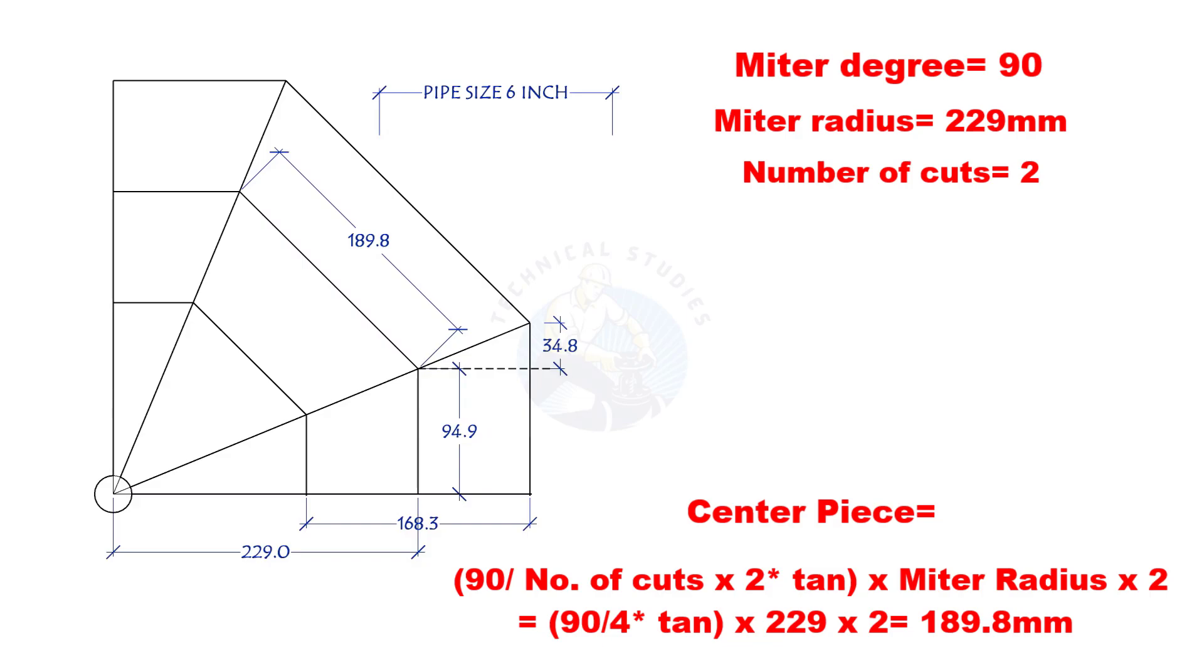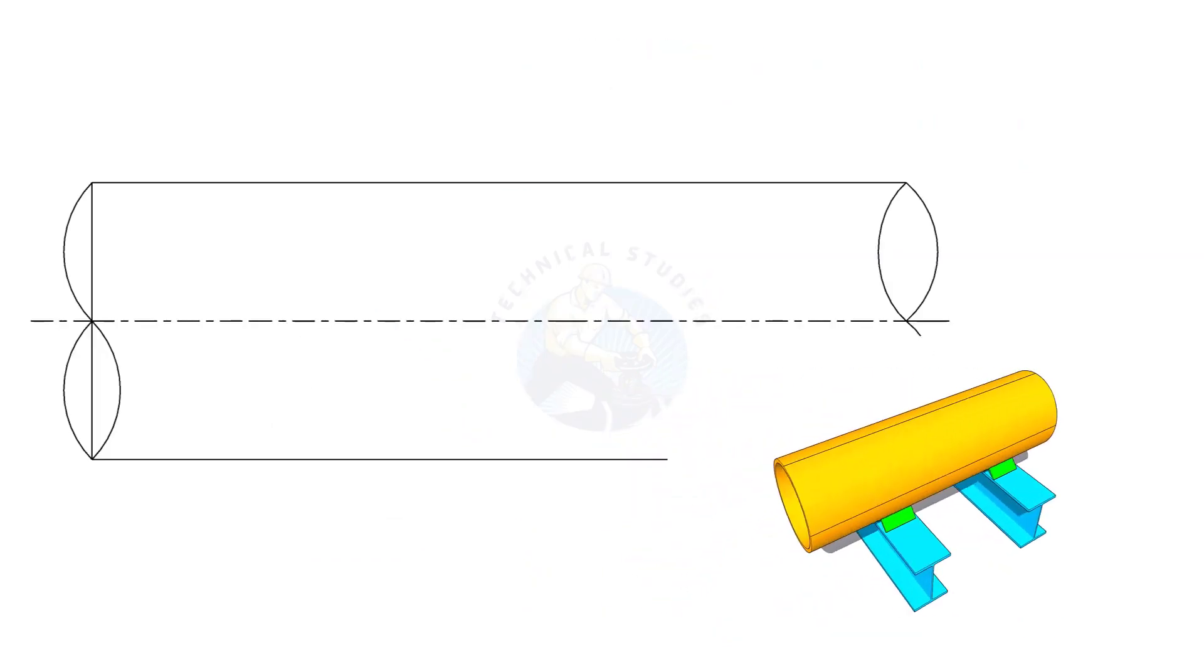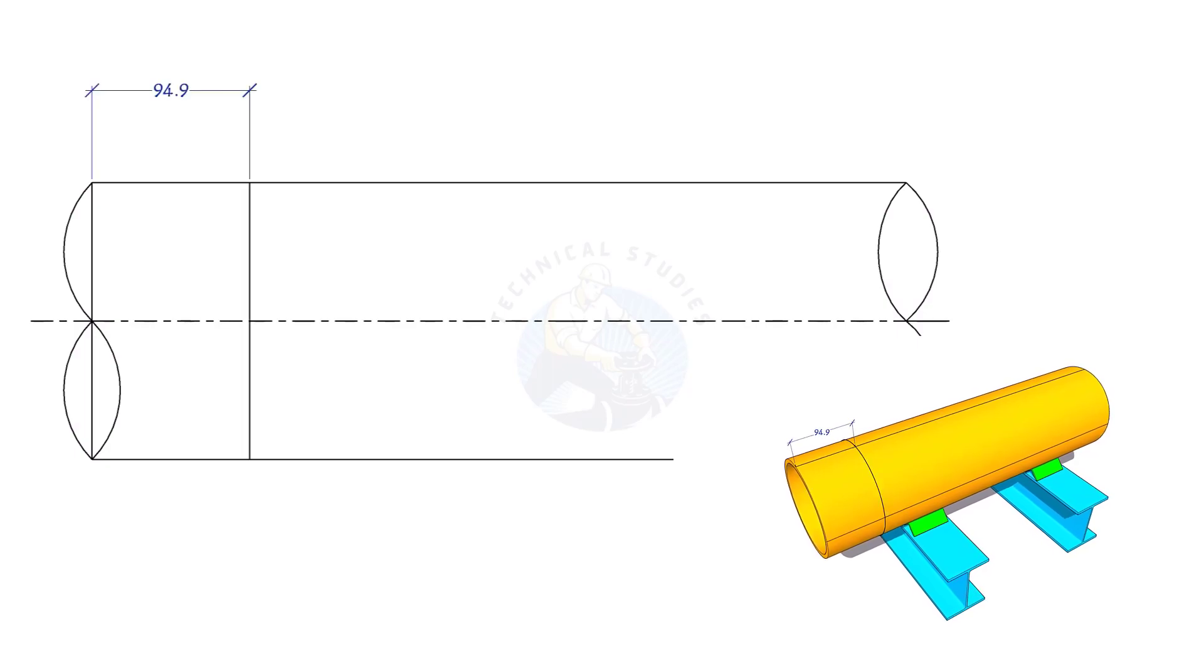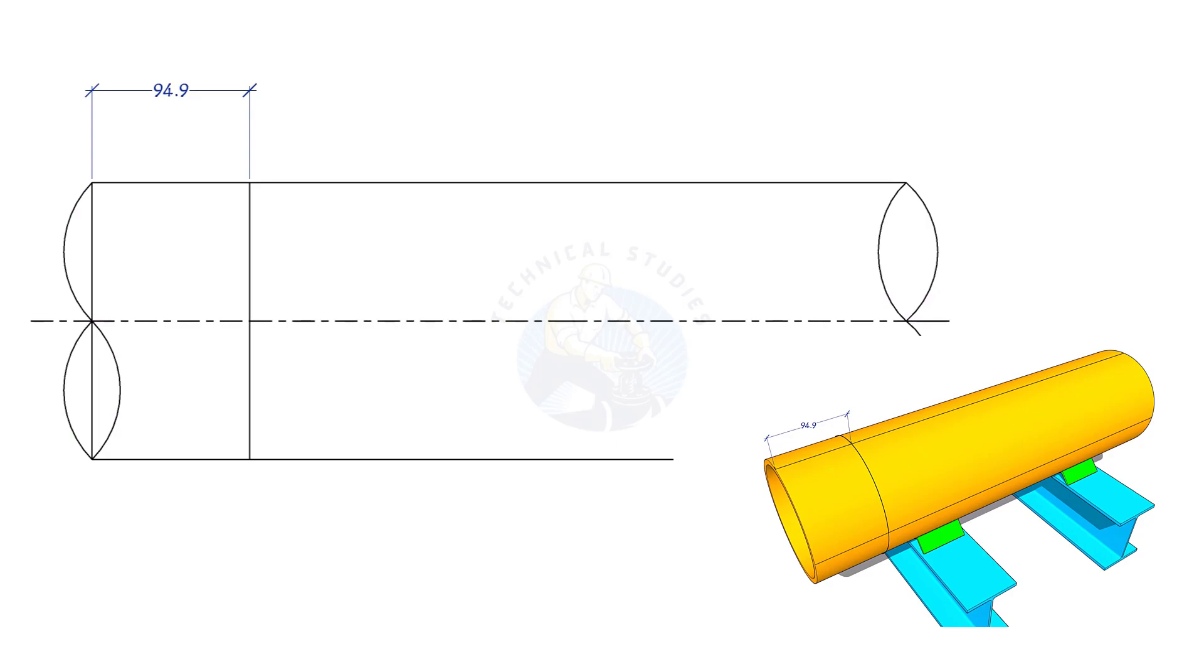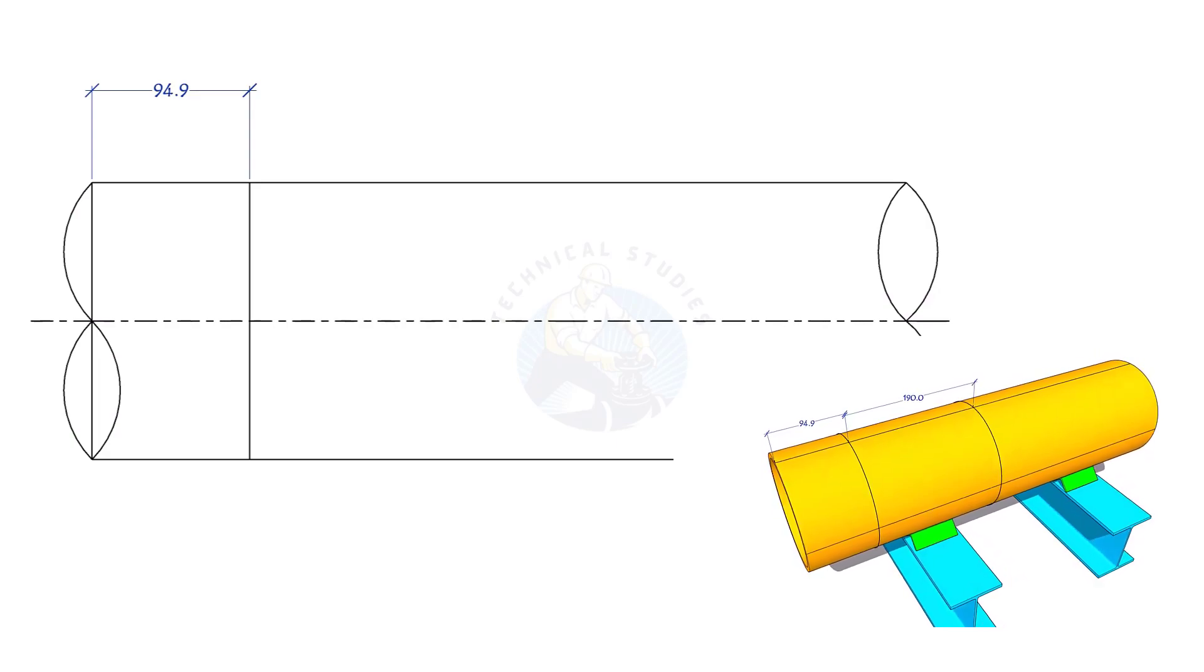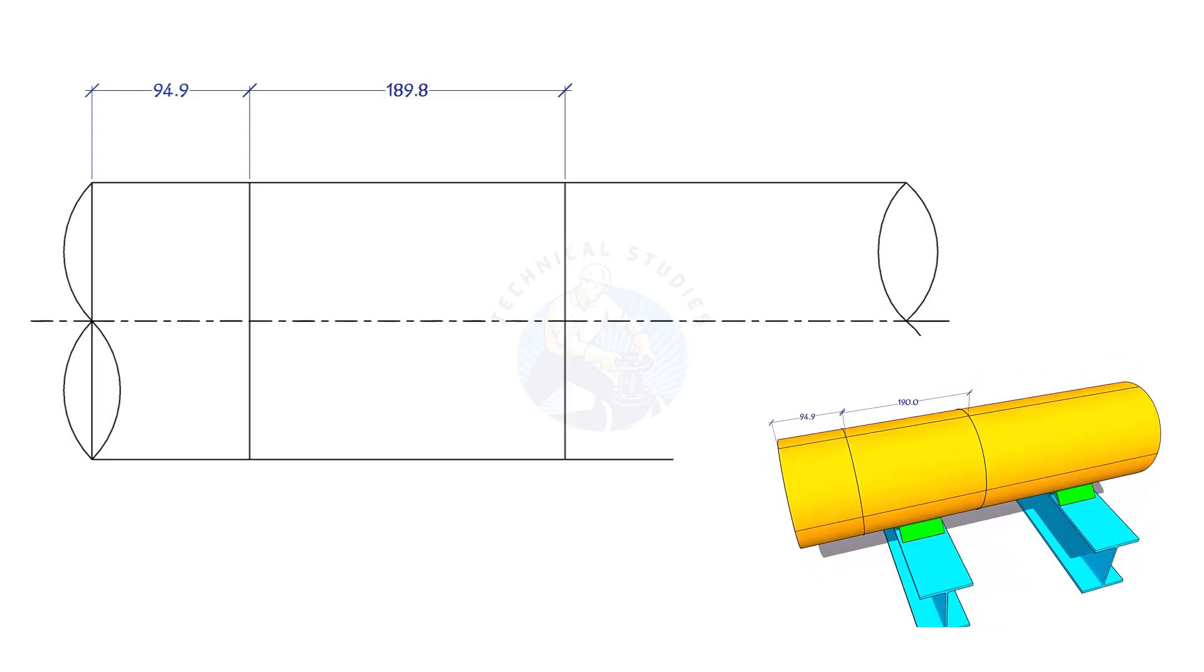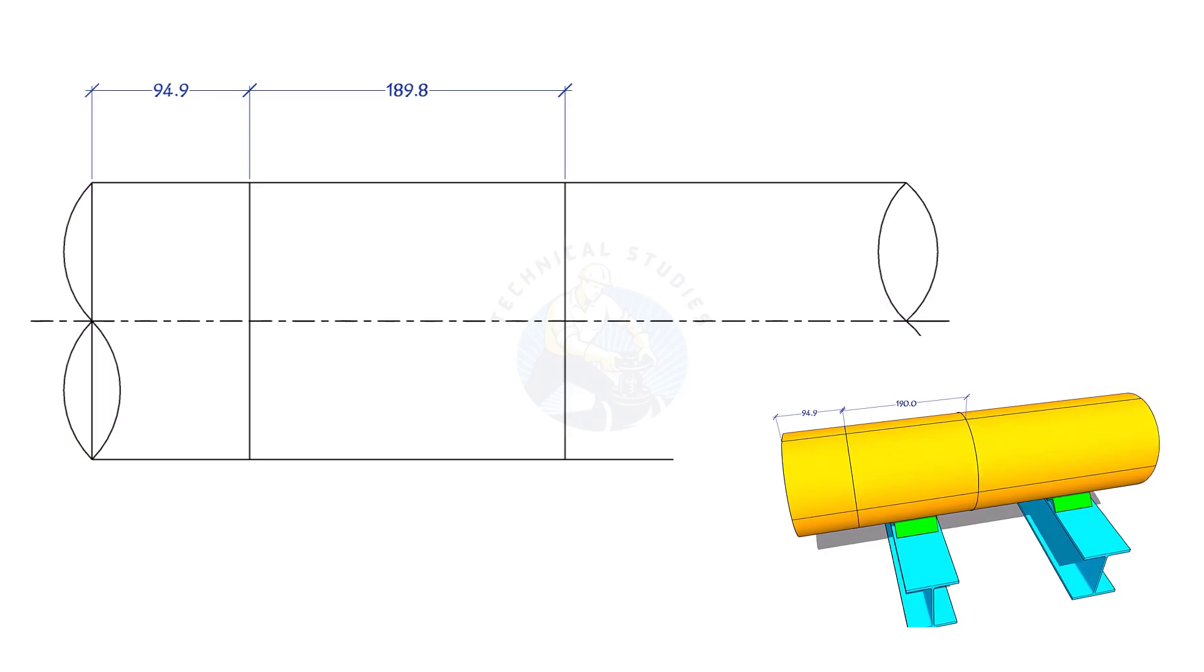Let us mark it on a pipe. Draw four equally spaced lines on the pipe. Mark the end part length, then the middle part and the other end part length as shown.